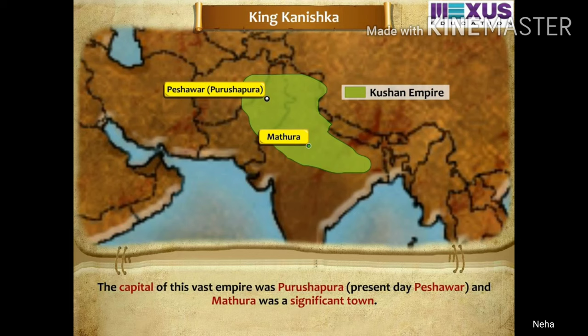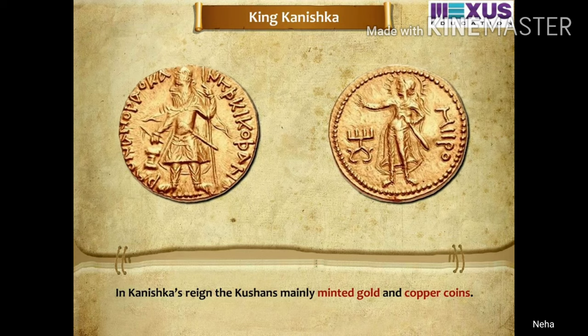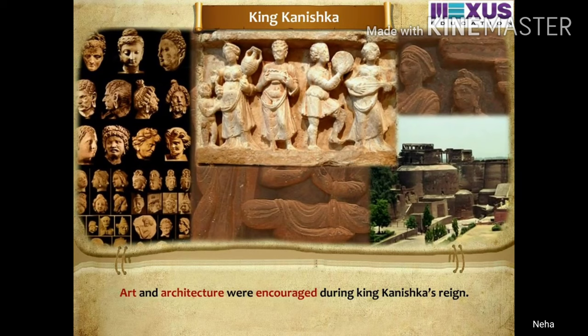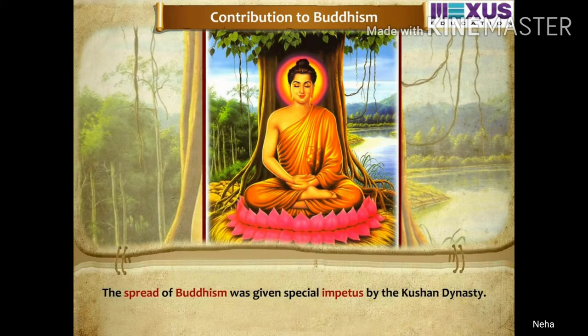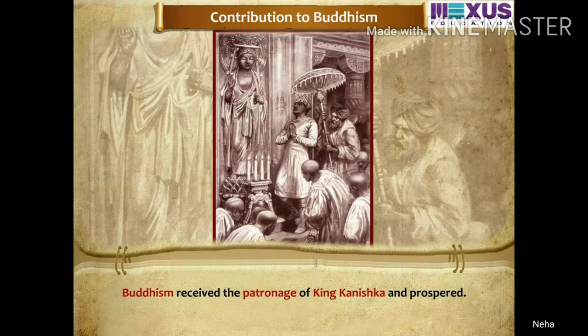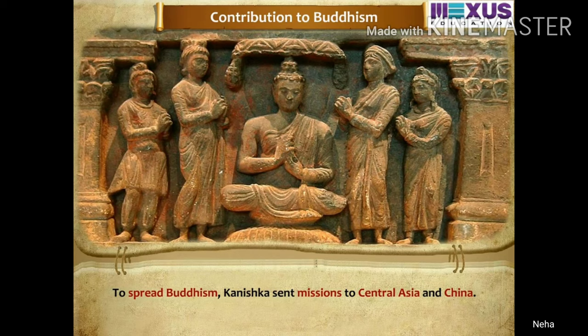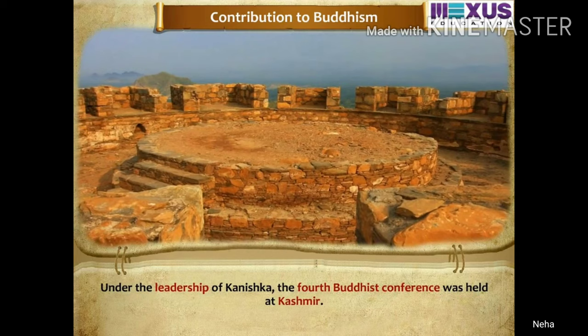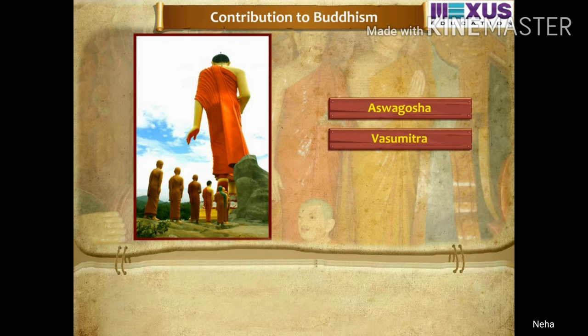The Kushan dynasty prospered greatly during Kanishka's reign. His kingdom spread up to Sanchi in the south and Banaras in the east and included Central Asia too. The capital of this vast empire was Kushpura, present-day Peshawar, and Mathura was a significant town. The Kushans mainly minted gold and copper coins, and art and architecture was encouraged during their period. The spread of Buddhism was given great importance — the Kushans took the Mahayana sect under their patronage. Kanishka sent missions to Central Asia and China, and under his leadership the 4th Buddhist conference was held at Kashmir. Buddhist scholars like Ashvaghosha, Vasumitra and Sangharaksha were famous scholars of this period.